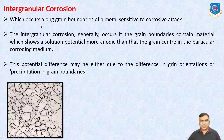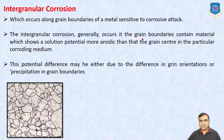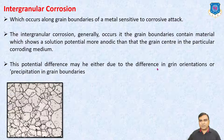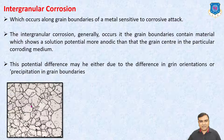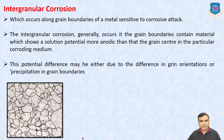Intergranular Corrosion occurs along grain boundaries of the metal, which are sensitive to corrosive attack. Intergranular corrosion generally occurs if the grain boundaries contain material which shows a solution potential more anodic than that of the grain center in the particular corroding medium. This potential difference may be either due to difference in grain orientations or precipitation in grain boundaries. If you see the internal structure of the metal, there are different grains and at each grain boundary the corrosion takes place. That type of corrosion is known as Intergranular Corrosion.